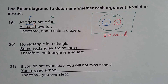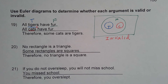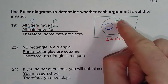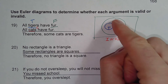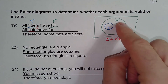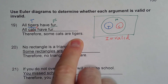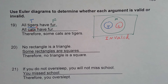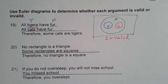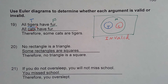Remember: you're trying to see if you can draw the premises correctly while making the conclusion fail. Cat could be over here by itself, it could overlap T, or it could encompass all of T. Since I have three different possibilities, I can't make one conclusion. For an argument to be valid, the conclusion has to be true in all cases when you draw the premises — and here it's not.